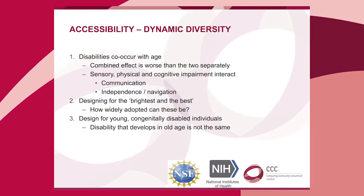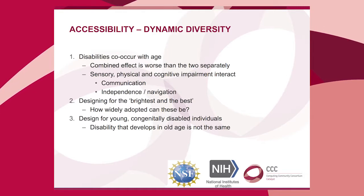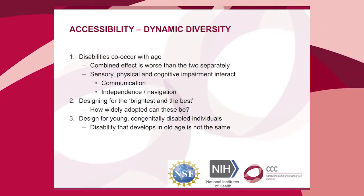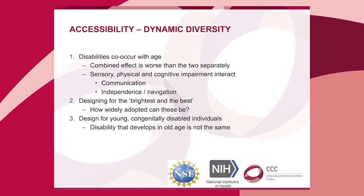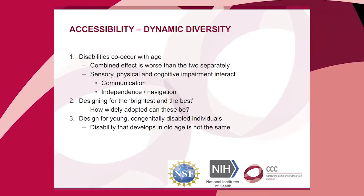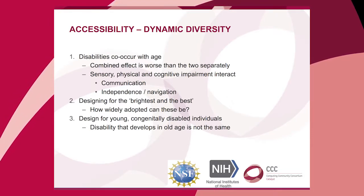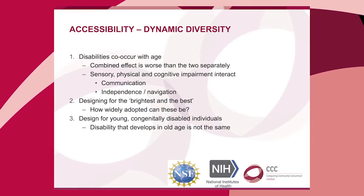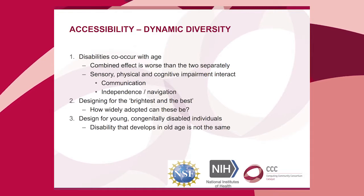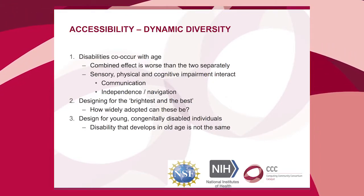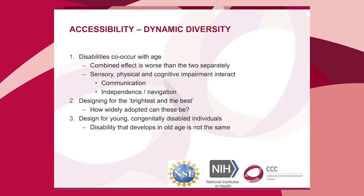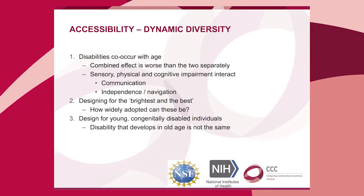There are real problems in accessibility research that don't get enough attention. Disabilities co-occur with age — there's a tendency to look at people with vision problems, or hearing problems, or motor disabilities separately, but not at how these co-occur in older adults. The combined effects are probably more than additive: if you have hand tremor making pointing difficult and also poor vision, clicking the right target on an iPad becomes very hard. Sensory, physical, and cognitive impairments all interact.